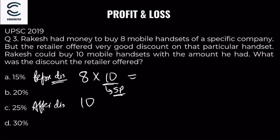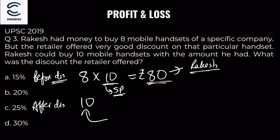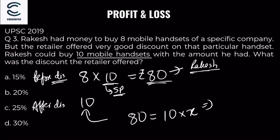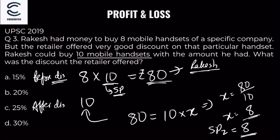Let selling price one (original price per mobile) be X. Rakesh's total money = 8X. After discount, he buys 10 mobiles with the same money, so selling price two = 8X / 10 = 0.8X. So selling price two is 8, selling price one is 10 (in relative units).